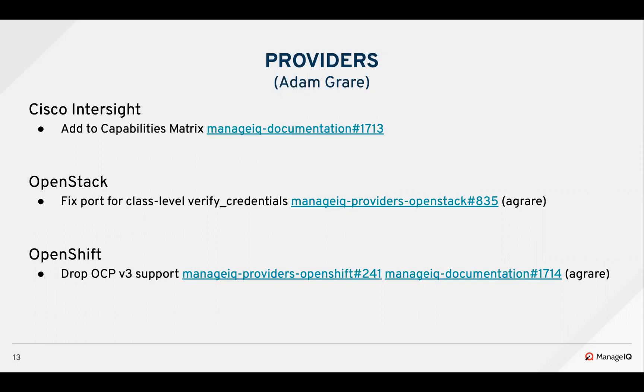Continuing with dropping older unsupported versions and providers: we dropped OCP v3 support as Red Hat no longer provides support for it. This allowed us to clean up a significant amount of code because the APIs for OpenShift v3 and v4 are completely different, so we were able to drop a bunch of logical code paths that we had been maintaining for quite some time.